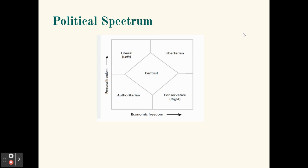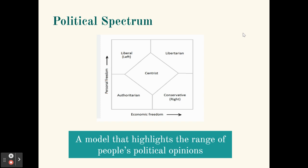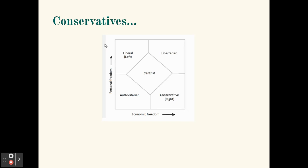This political spectrum illustrates where people fall in terms of their political thought processes. A political spectrum is a model used by political scientists to highlight the range of attitudes and opinions people have about politics. The bottom axis represents economic freedom — the further right, the more economic freedom people desire, meaning less government regulation of the economy. The vertical axis represents personal freedom — the higher up, the more personal freedom those individuals desire.